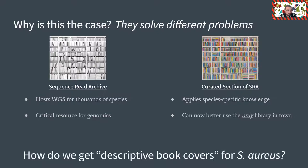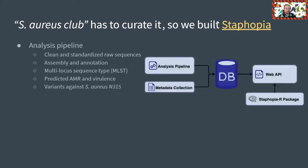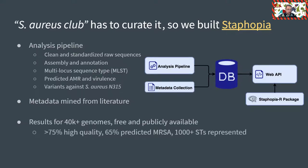So how do we get descriptive book covers for Staph aureus? Well, you probably guessed it — the Staph aureus community has to curate it. So we built Staphopia. Staphopia includes an analysis pipeline that takes genomes from the SRA and processes them: it cleans and standardizes raw sequences, assembles and annotates, determines MLST type, predicts antibiotic resistance and virulence, and calls variants against Staph aureus N315. Staphopia also includes extensive effort to extract metadata from publications. It includes results for more than 40,000 genomes and is free and publicly available. More than 75% of these genomes are high quality, 65% are predicted to be MRSA, and 1,000 unique sequence types are represented. Even better, Staphopia offers programmatic access to all the data.